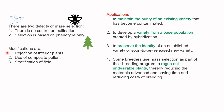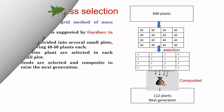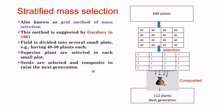Some modifications done in mass selection include: rejection of inferior plants (negative selection), use of composite pollen — fertilization of stigma with multiple pollens to ensure fertilization and produce more seeds — and stratification of the field, also known as stratified mass selection or the grid method of mass selection, suggested by Gardner in 1961.